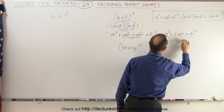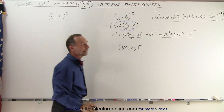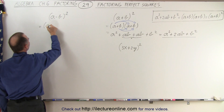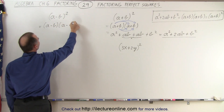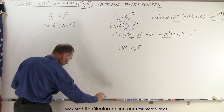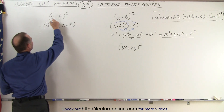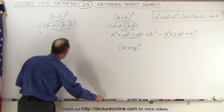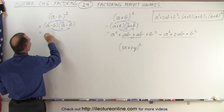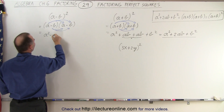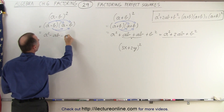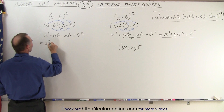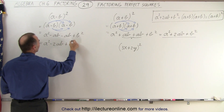Notice when we have something that looks like this, we can convert it to look like that. What if we have a negative sign? This can be written as a minus b times a minus b. We multiply a times a, a times negative b, negative b times a, and negative b times negative b. This gives us a squared minus ab minus ab plus b squared. Combining the two middle terms, this is a squared minus 2ab plus b squared.